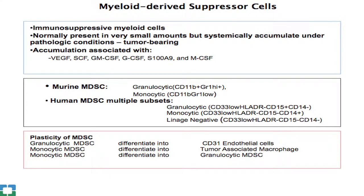The other important cell type we've been studying is myeloid-derived suppressor cells (MDSCs) — a heterogeneous population of myeloid cells present at less than one percent in peripheral blood of normal individuals, but increased in response to various growth factors. They come in two flavors — granulocytic or monocytic in mice — with similar populations in humans, plus a lineage-negative population. These cells have a lot of plasticity: they can differentiate into endothelial cells, macrophages, or monocytic cells can differentiate into granulocytic cells.